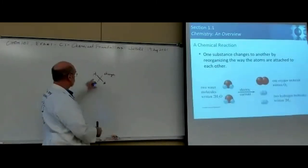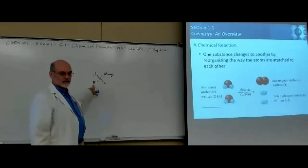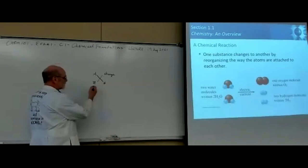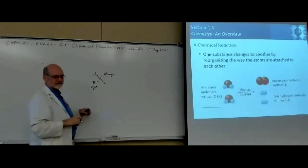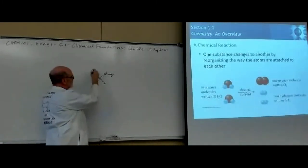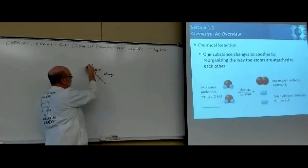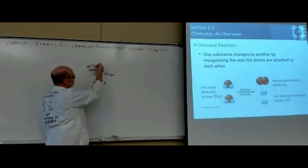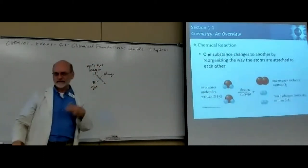Over here on the left, we have the atomic number designated with a Z. This is the number of protons. And this is the mass number, which is the summation of the number of protons plus the number of neutrons.